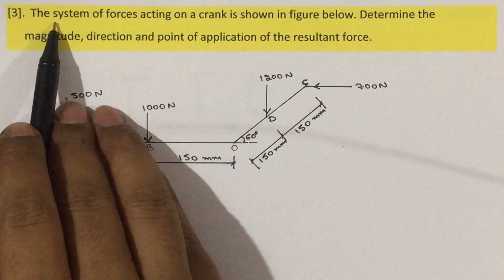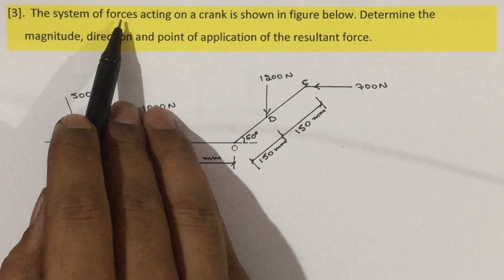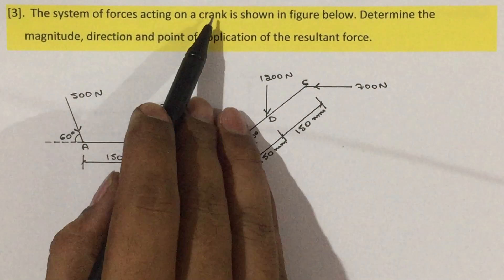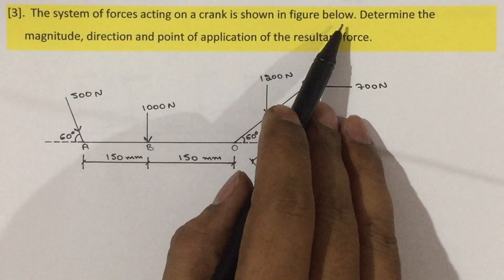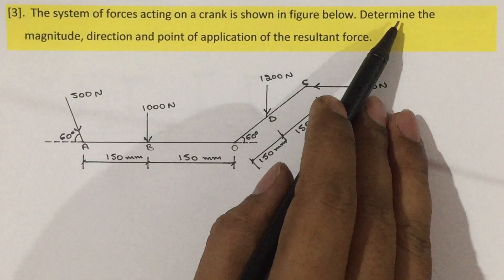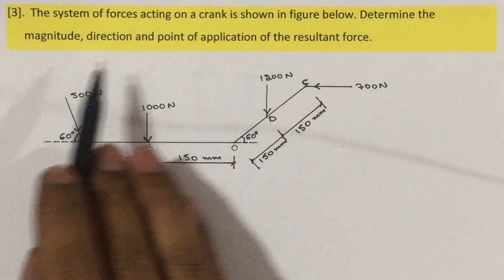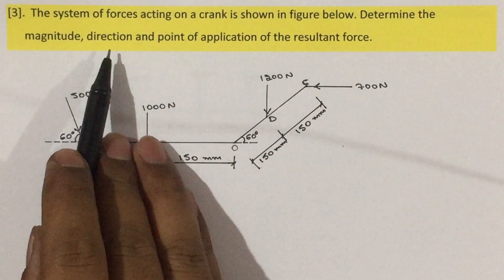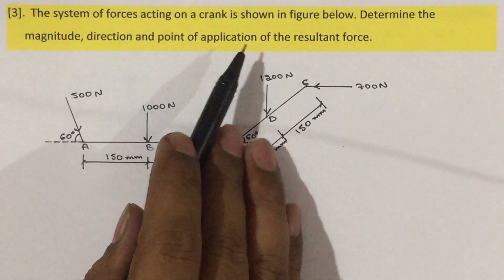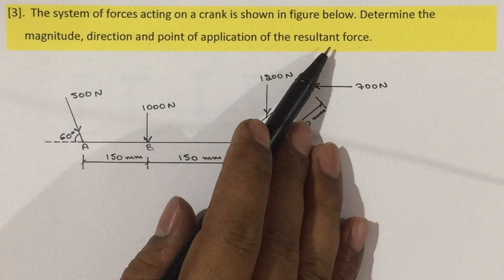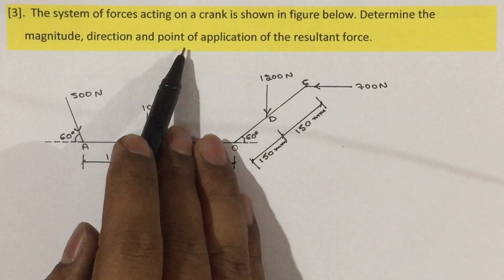Problem 3. The system of forces acting on a crank is as shown in the figure below. Determine the magnitude, direction, and point of application of the resultant force.